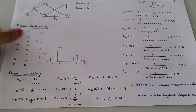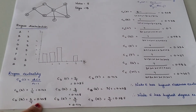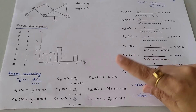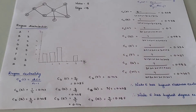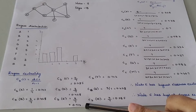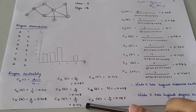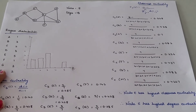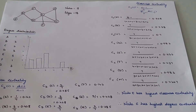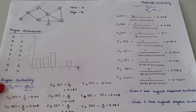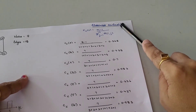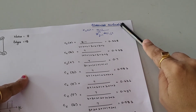For node B, degree is 3, so 3/7 = 0.428. In the same way, calculate for C, D, E, and remaining nodes. If you calculate degree centrality for each and every node, you can see that for node E you have the highest value, that is 0.714. Therefore node E has the highest degree centrality.